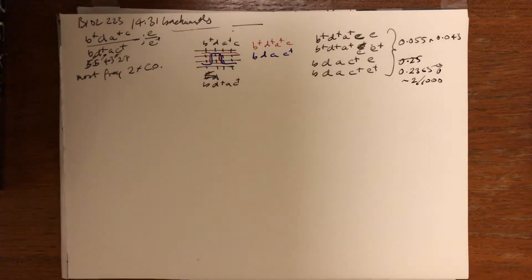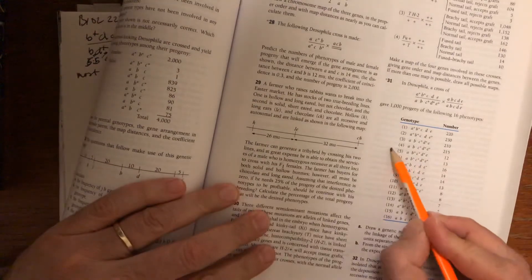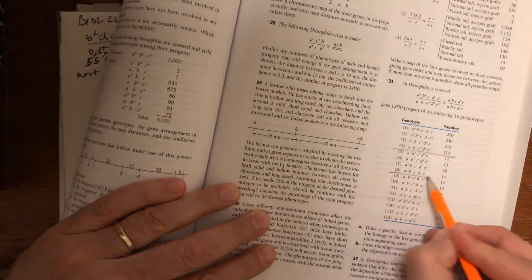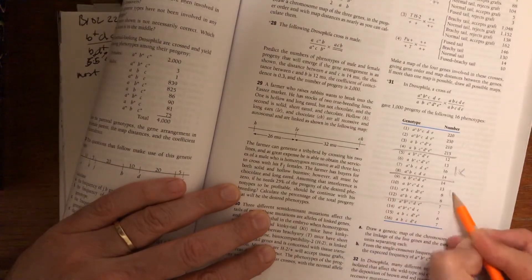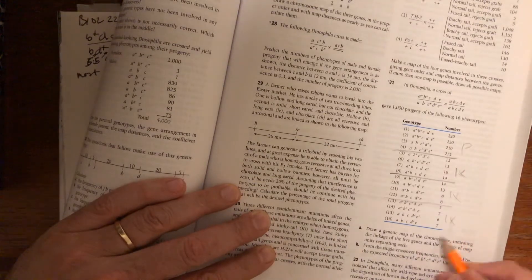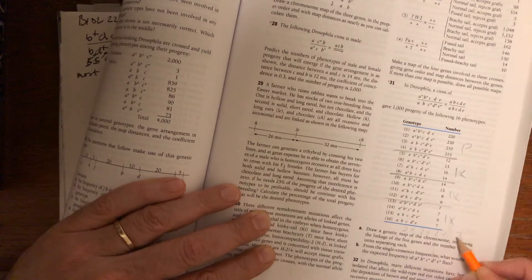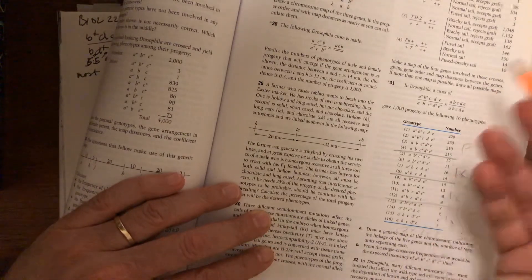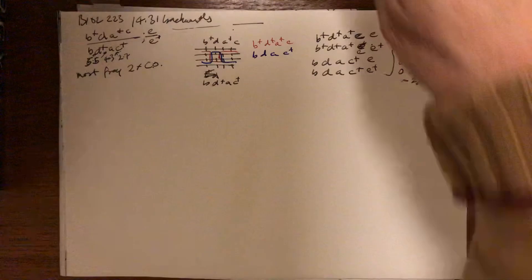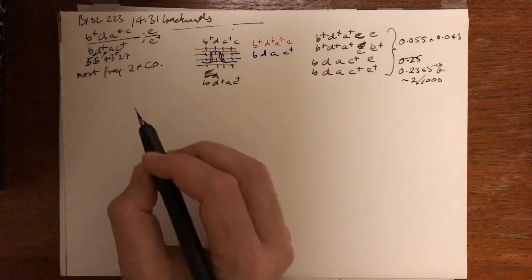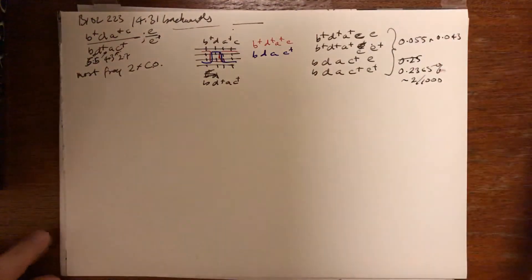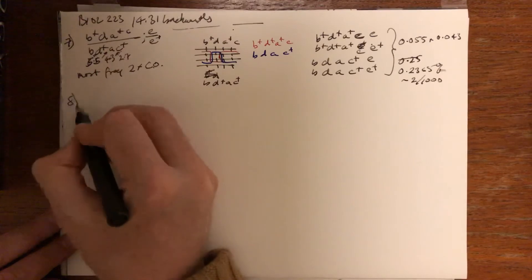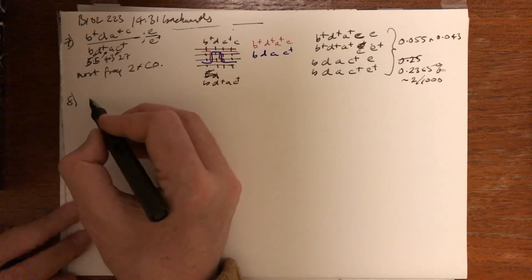In the book, problem 31 shows that the first four classes lead to parental, then we have single crossing over classes. The other classes not shown are double crossing over, double crossing over, double crossing over, and triple crossing over. These are not shown. Of the 32 possible classes, only 16 are shown — because in observing 1,000 progeny, we don't see things that are very rare.